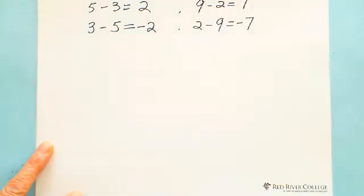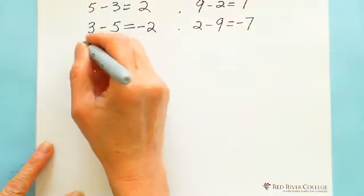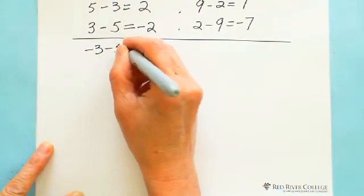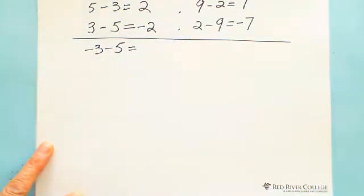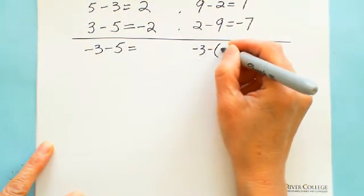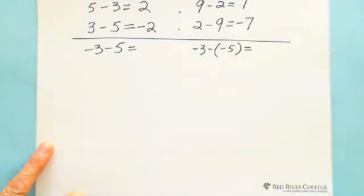But when we're working with integers, when we're working with negative numbers — let's say the question is negative 3 subtract 5, or negative 3 subtract negative 5. How to do those kinds of questions? When we try those kinds of questions, first of all, same meaning: subtraction means find the difference between two numbers.